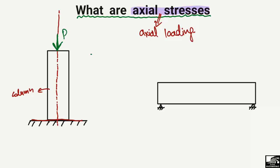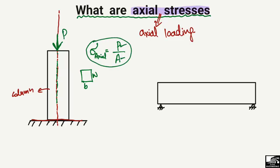The load here is P, and the axial stress sigma_axial equals the axial load divided by the cross-sectional area of the column. For example, if it is a rectangular column, the area is breadth multiplied by width. Dividing the axial load by the area gives us the axial stresses for this column.